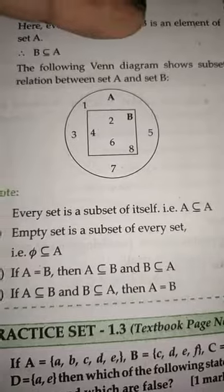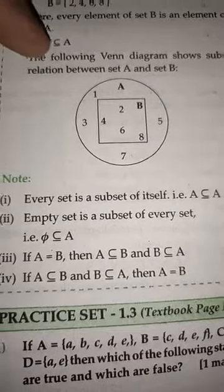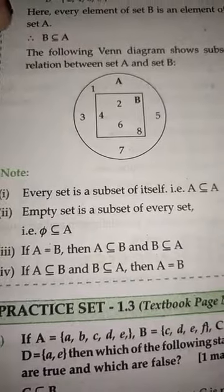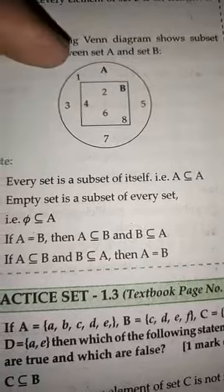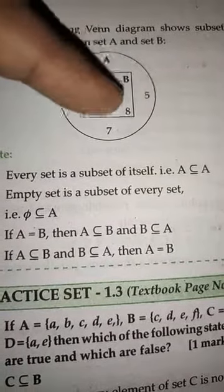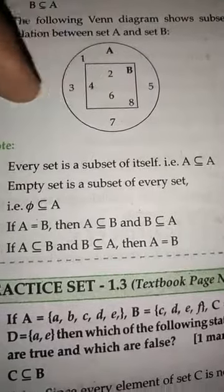Every element of B is an element of set A, so B is a subset of A. The following Venn diagram shows the subset relation between A and B. B is inside of A.